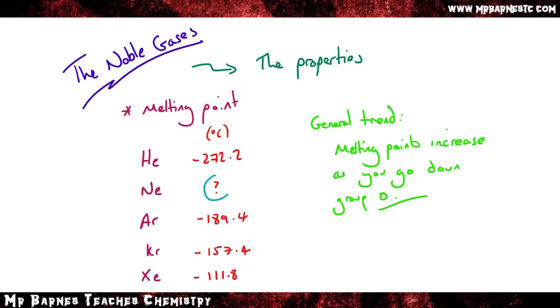Now what they might do is ask you to predict one of the properties. So they might give you a table such as this and say what is the melting point from neon. Now the easiest way to do that is to take the average in between the two. So if you add minus 272.2 to minus 189.4 and divide by two it will give you a pretty accurate representation of what the melting point is.